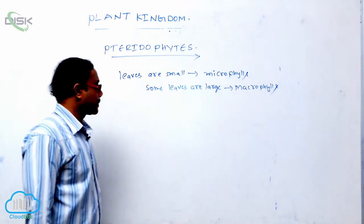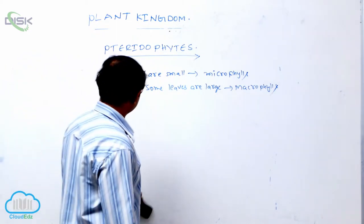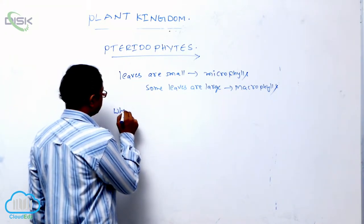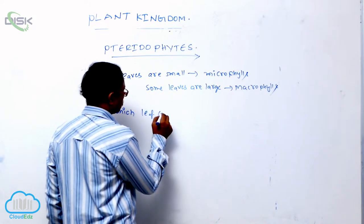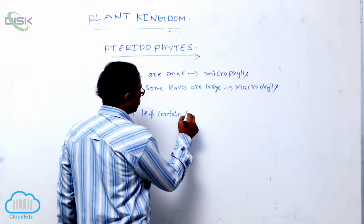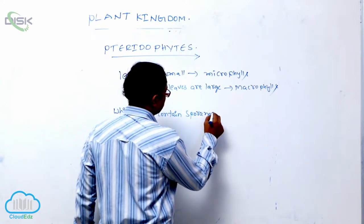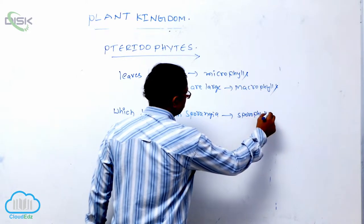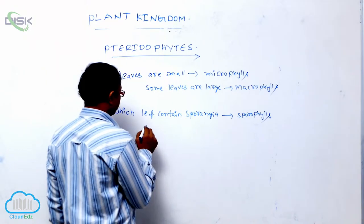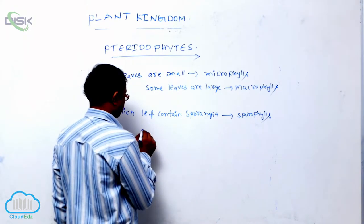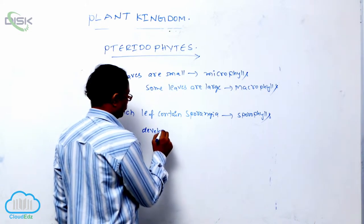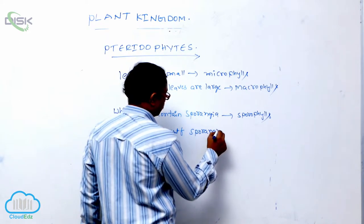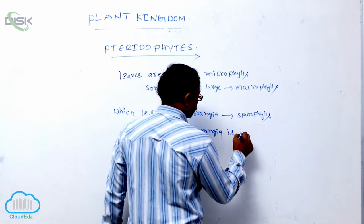Generally, regarding the development of sporangia — the leaf which contains sporangia is known as a sporophyll. The development of sporangia is of two types.